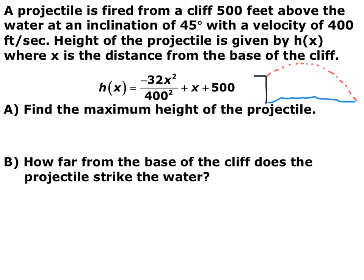For this next problem, we have a projectile being fired from a cliff 500 feet in the air over water, fired at an inclination of 45 degrees with an initial velocity of 400 feet per second. The height of the projectile is given by h(x) = −32x²/400² + x + 500, where x is the distance from the cliff and h is the height off the water. They're giving us the function in standard form. We want to find the maximum height — the a value is negative, so it's a downward-facing parabola and we'll have a maximum.